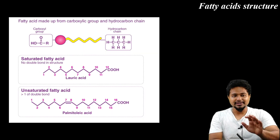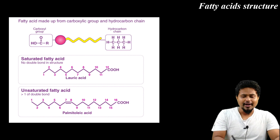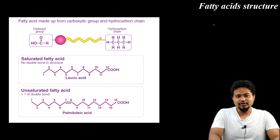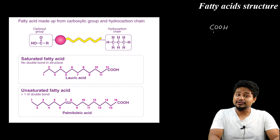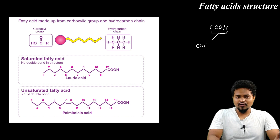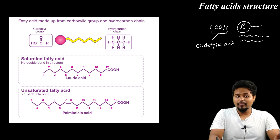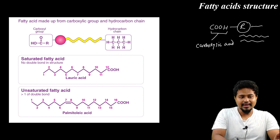Fatty acid structure: a fatty acid consists of a COOH group — that is a carboxylic acid — plus an alkyl R group. The R group is a long hydrocarbon chain, a long carbon chain.